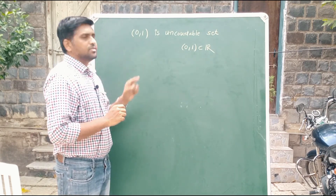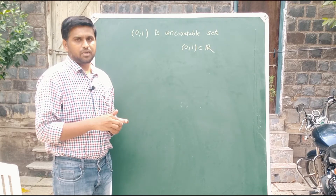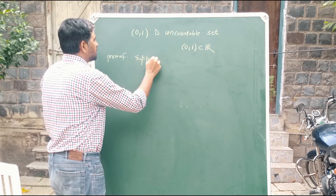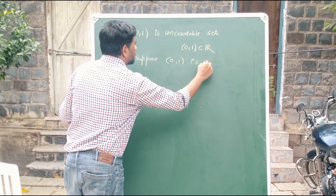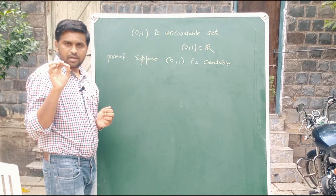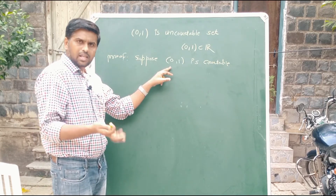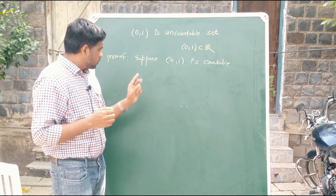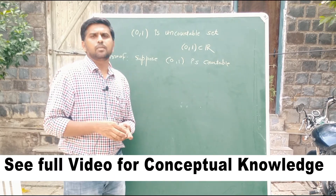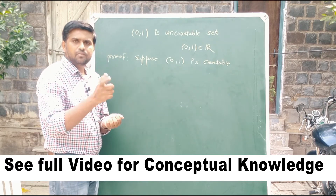We prove that the open interval (0,1) is uncountable using the contradiction method. We suppose it is countable. If the open interval (0,1) is countable, by our definition it means we can label all the elements. The open interval (0,1) does not contain 0 or 1, so it contains only the points strictly in between.